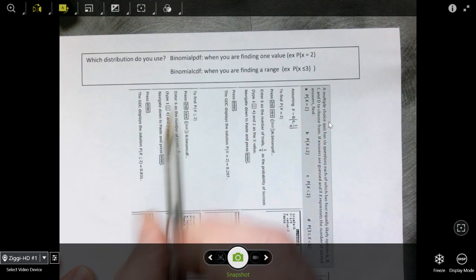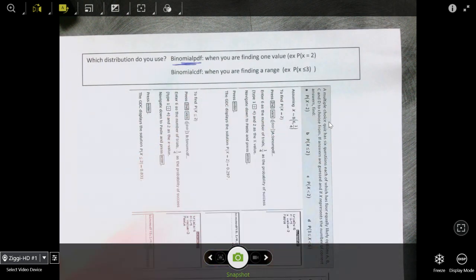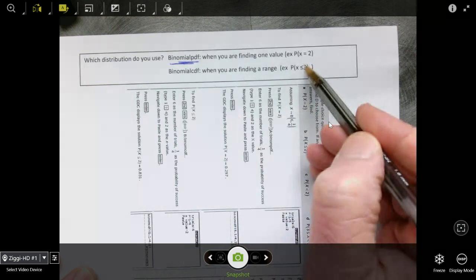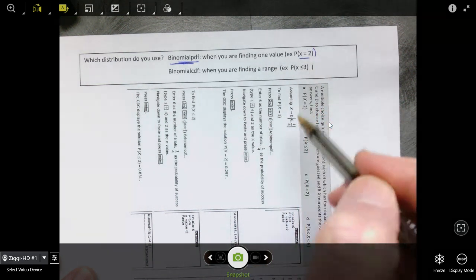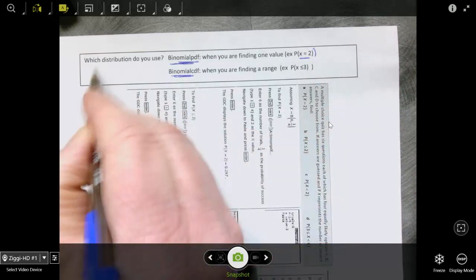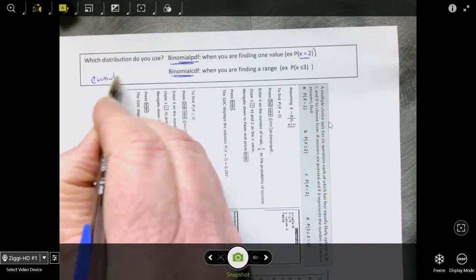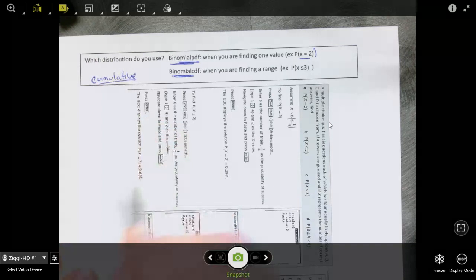So one of them is called binomial PDF. And you're going to do that when you are finding one specific value like x equals 2 or x equals 5. And the other one is called binomial CDF. The C stands for cumulative.